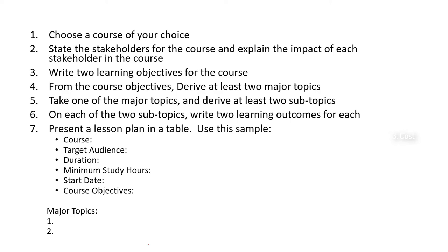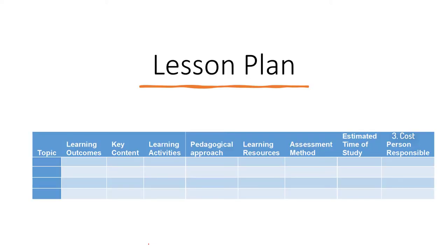Number six says on each of the two subtopics, write two learning outcomes for each. We are now moving from teacher-centered to student-centered. Number seven says present a lesson plan in a table using the sample provided. You have the course, target duration, minimum hours of study, start date, and course objective as part of your course information, along with the two major topics and subtopics.